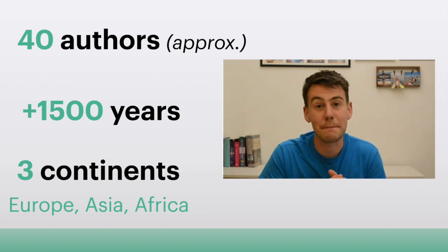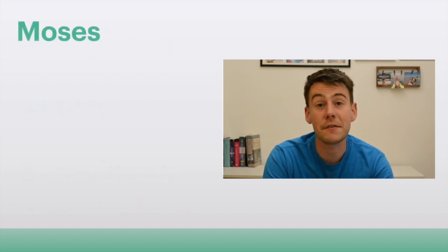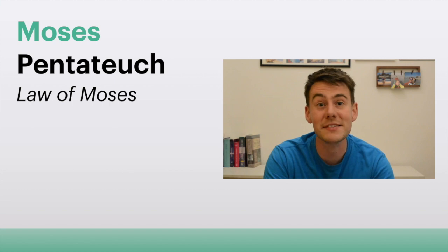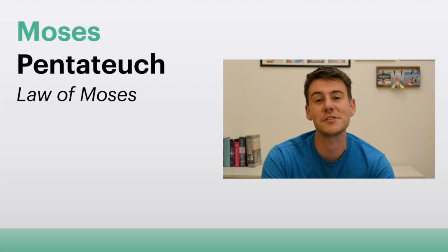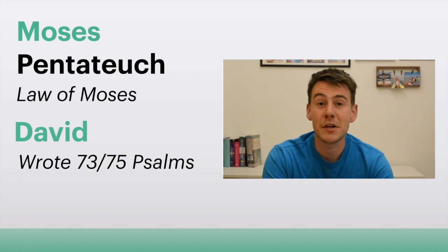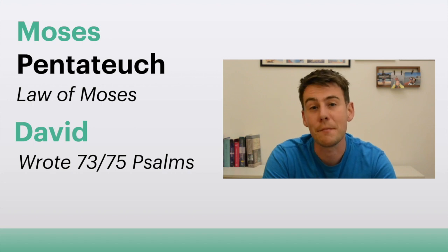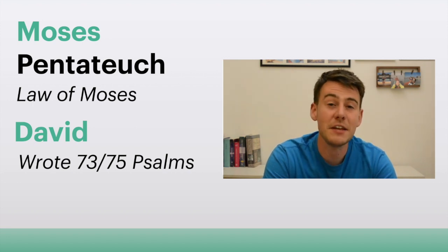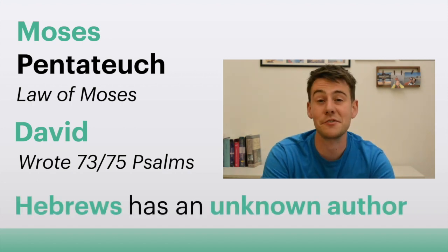It was written by many different authors, some of them very famous — such as Moses, who wrote the first five books, otherwise known as the Pentateuch: Genesis, Exodus, Leviticus, Numbers, and Deuteronomy. These are also known as the Law, so when scripture refers to the Law of Moses, it's talking about the Pentateuch. You've also got David, who wrote many of the Psalms, and then authors we don't know, such as the author of Hebrews, who remains something of a mystery.